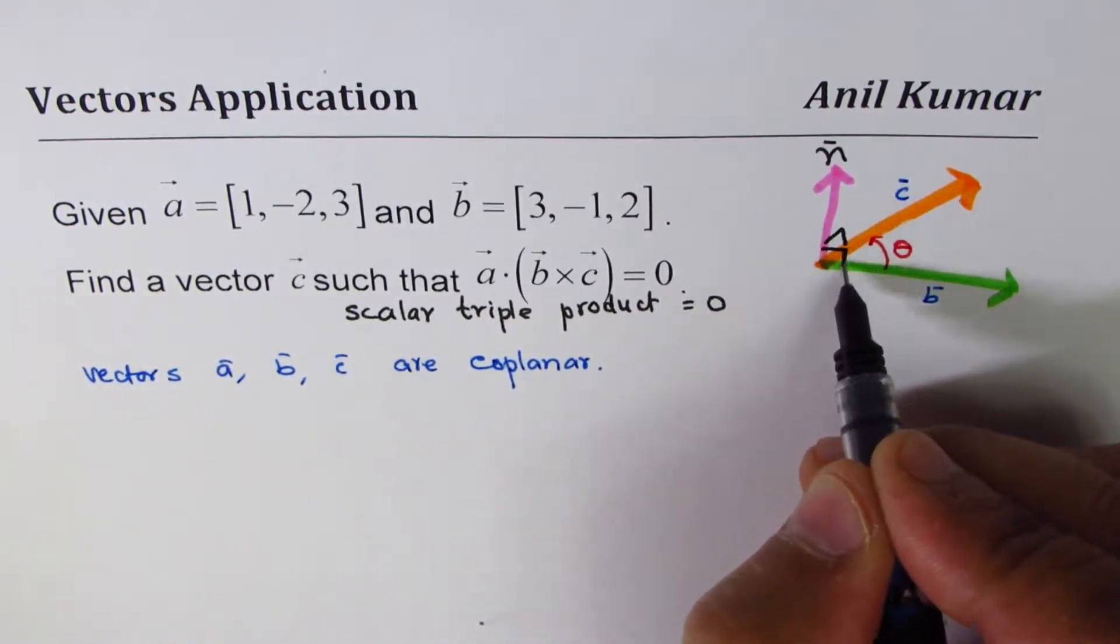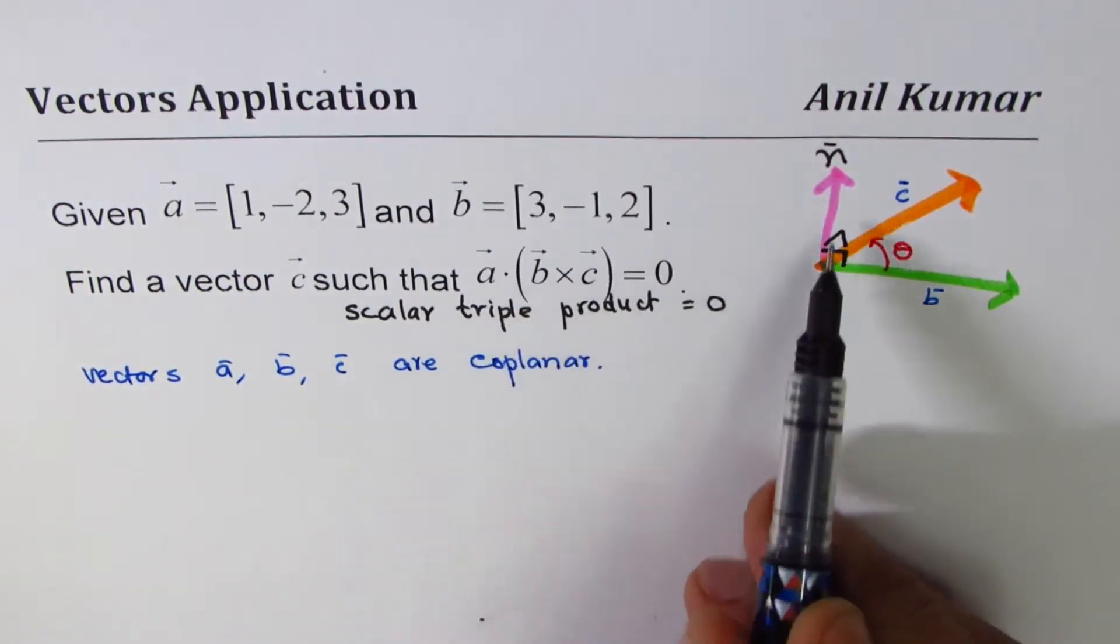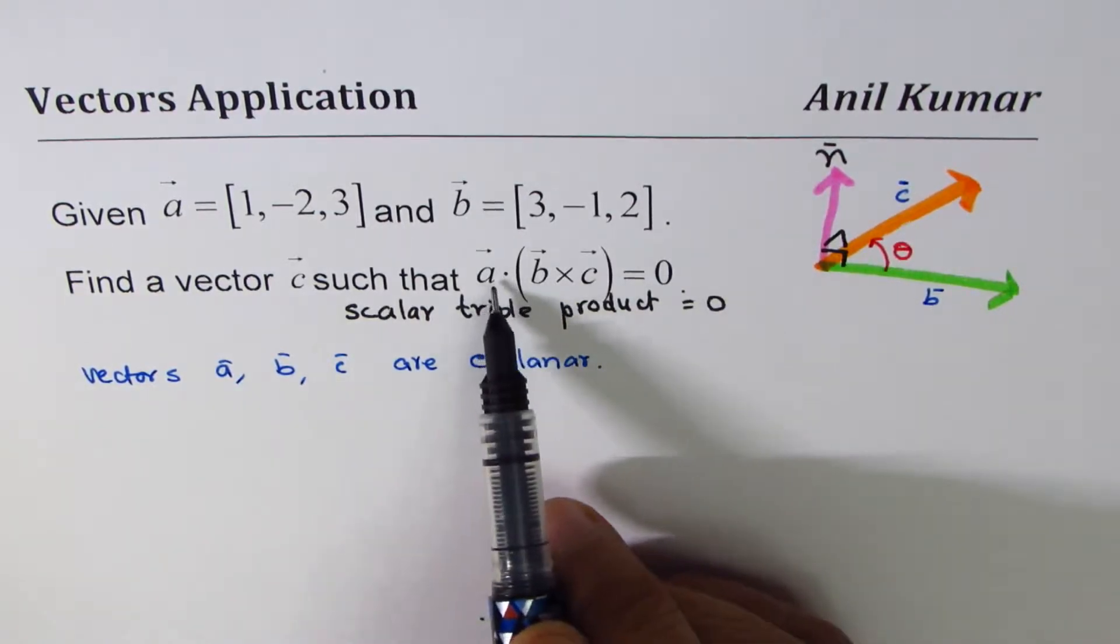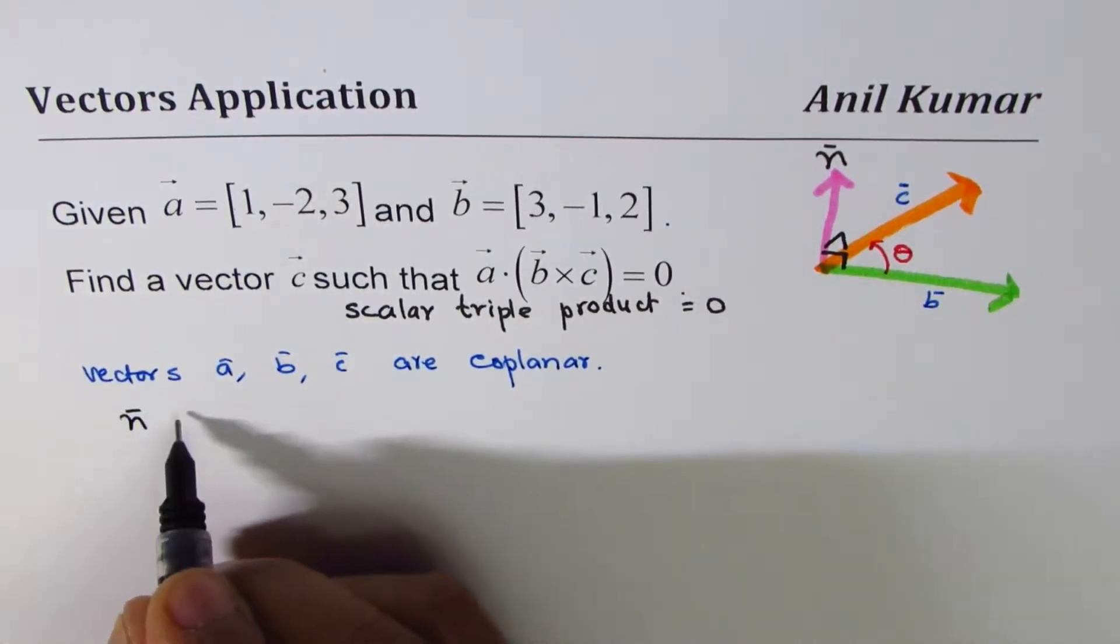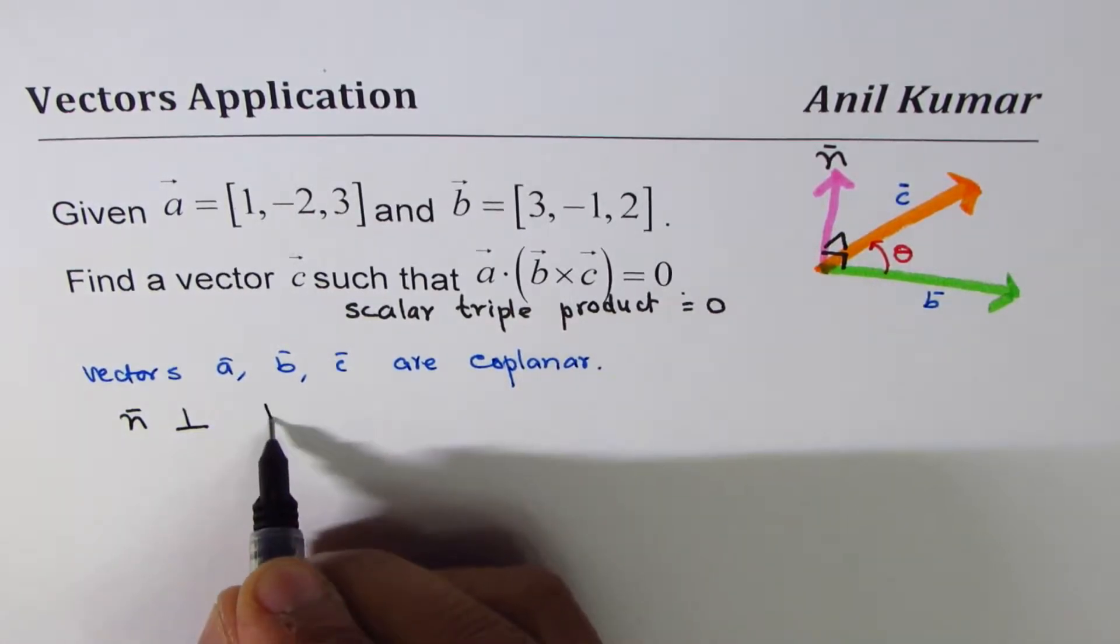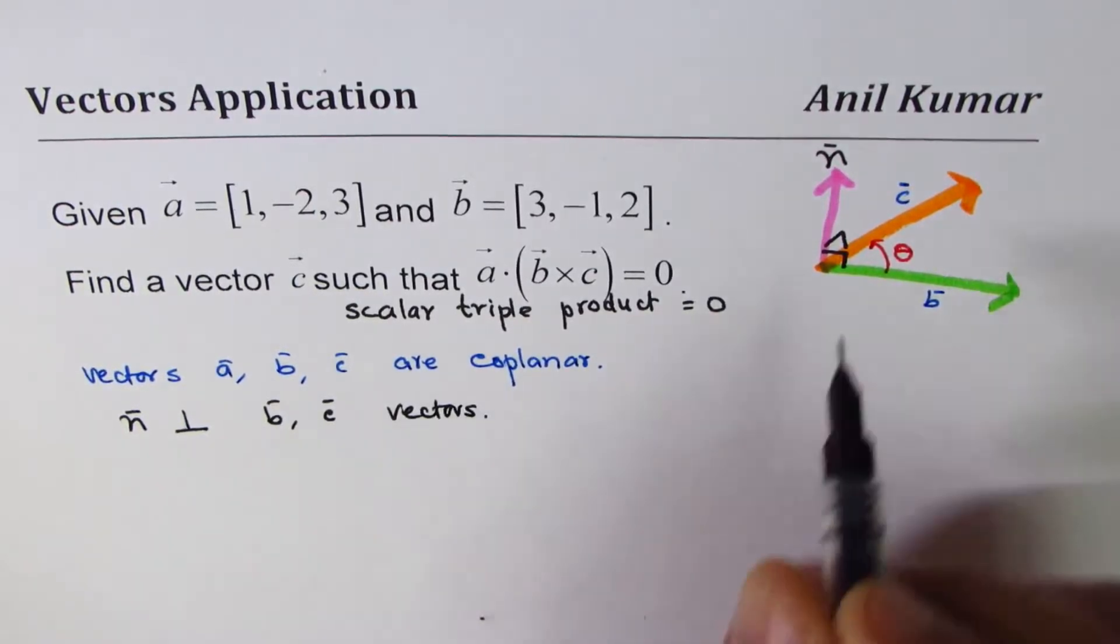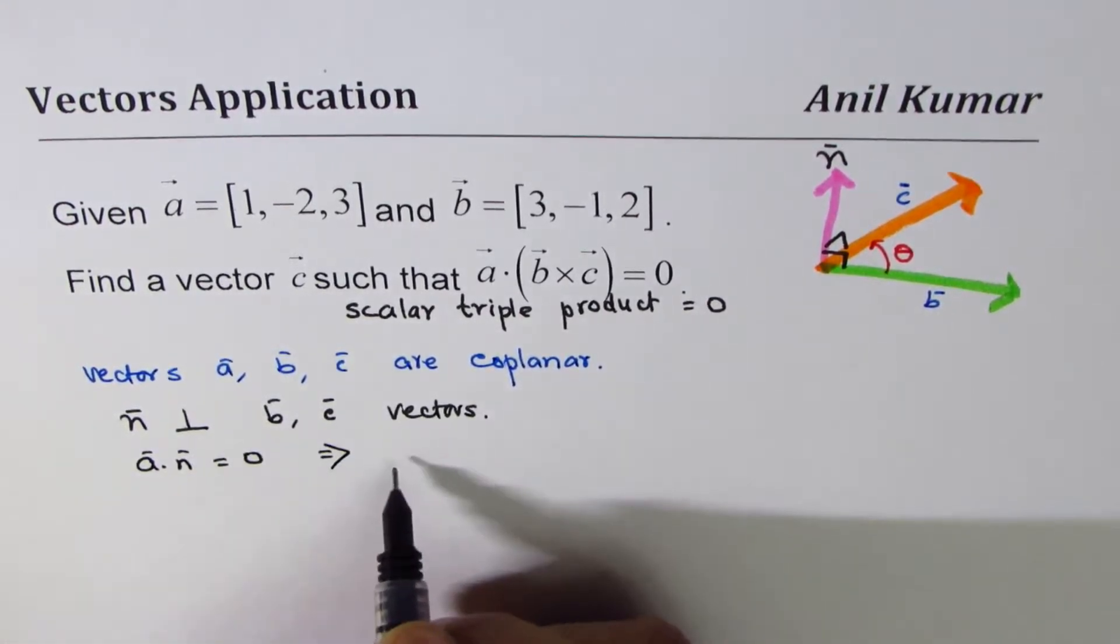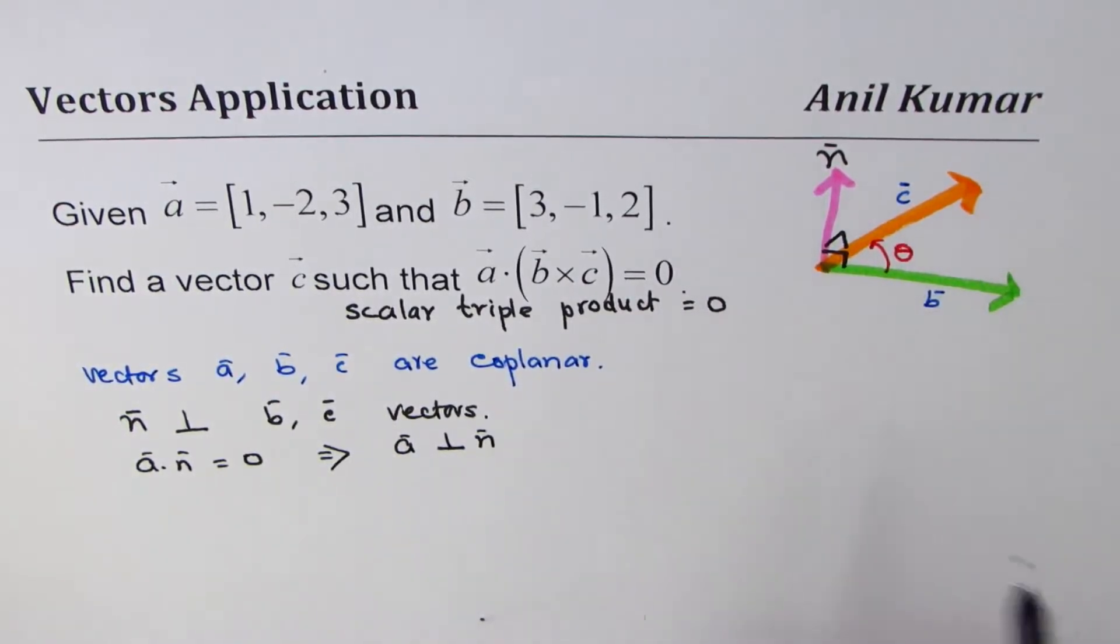Now if I want a vector a whose dot product with normal is 0, that means a should be perpendicular to n. We know normal is perpendicular to b and c vectors. If I want a dot n equals 0, this implies that a is also perpendicular to normal.